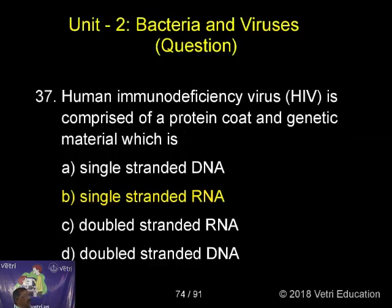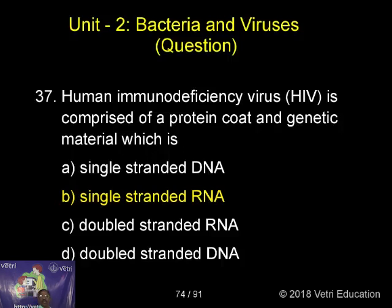Human Immunodeficiency Virus is comprised of a protein coat and genetic material which is: A. Single-Stranded DNA, B. Single-Stranded RNA, C. Double-Stranded RNA, D. Double-Stranded DNA. The correct answer is Single-Stranded RNA.